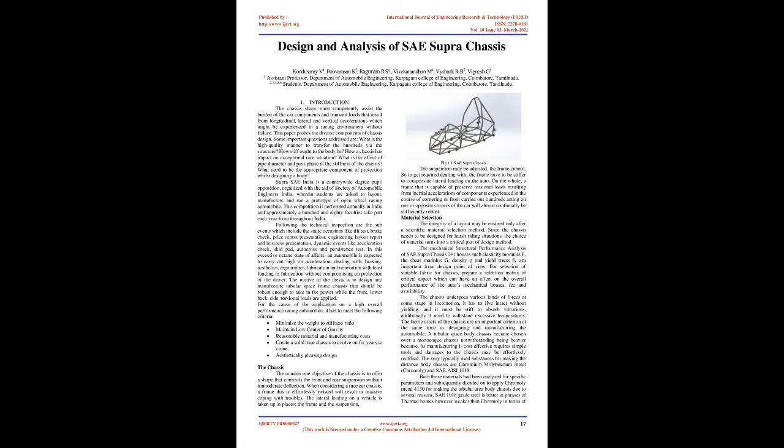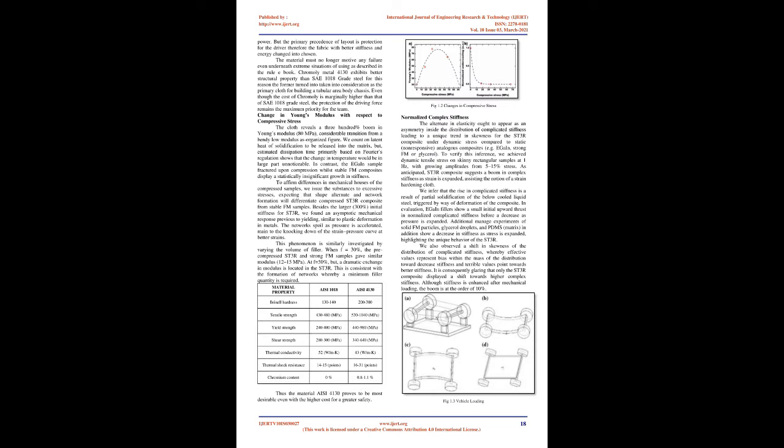For selection of suitable material for the chassis, a selection matrix of critical aspects is prepared which can affect the overall performance of the automobile's mechanical properties and availability. The chassis undergoes various kinds of forces during locomotion; it must remain intact without yielding, must be stiff enough to absorb vibrations, and must withstand high temperatures. A tubular space frame chassis was chosen over a monocoque chassis, despite being heavier, because its manufacturing is cost-effective, requires simple tools, and damages can be easily rectified.